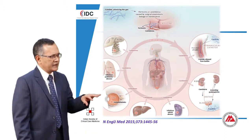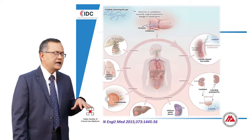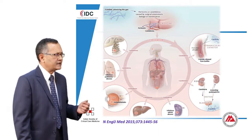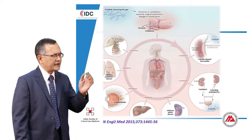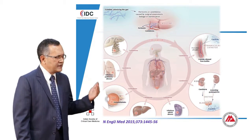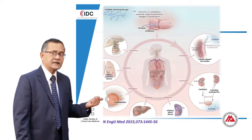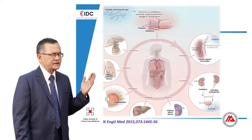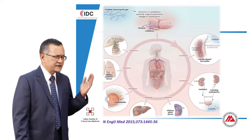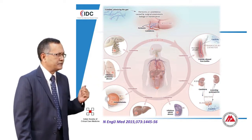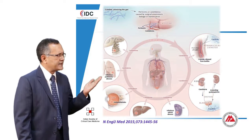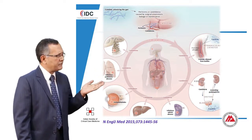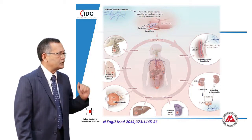Once candidemia is produced, it can affect any organ. Most commonly it affects the kidney — the kidney has a predilection for candida infection. The liver and spleen can also be affected. Certain patients develop endophthalmitis. Lung lesions in candida are less common, but in severe candidemia some cases may develop lung abscesses. Candida can also affect the bones and the brain.